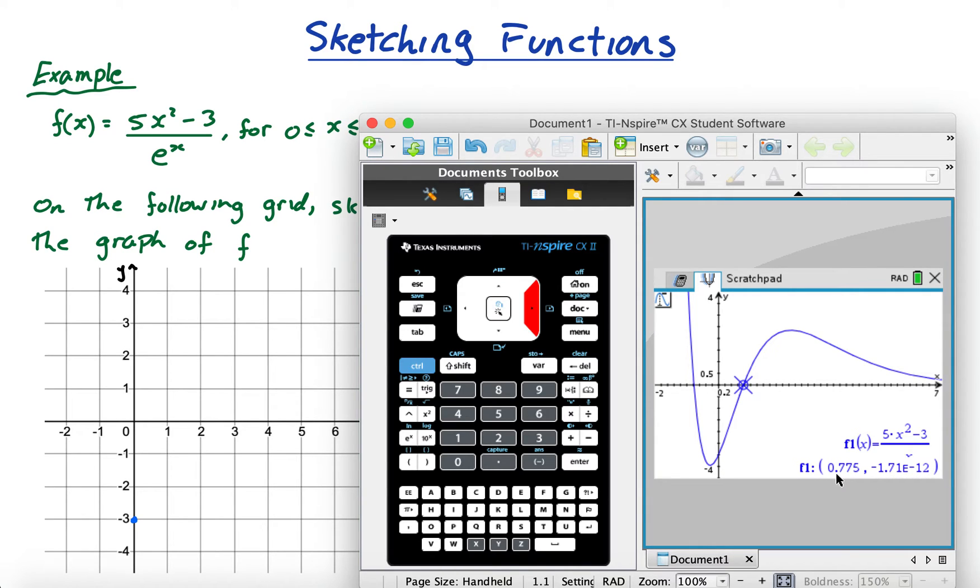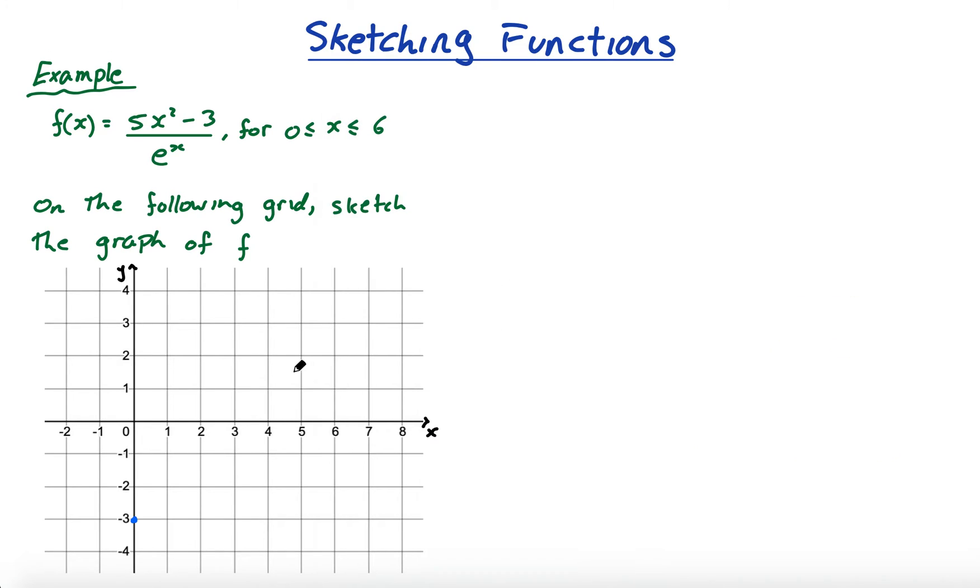So how accurate do I need to be? Well obviously it doesn't have to be perfectly accurate because I can't even do that here. It just has to be within a kind of a range. Normally the examiner will draw a circle and say if they have their point in there then it's fine. So I'm going to put it at 0.775, it'll be over here somewhere, about three quarters of the way through.